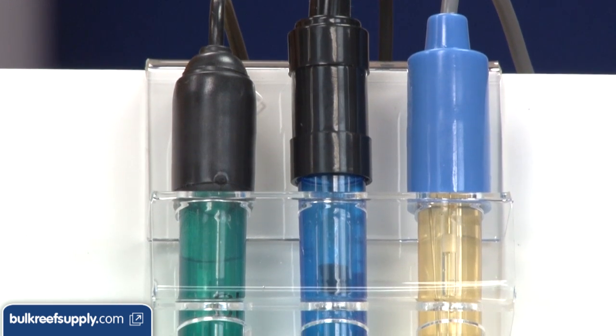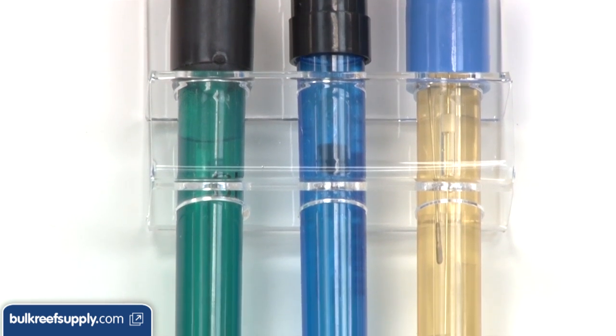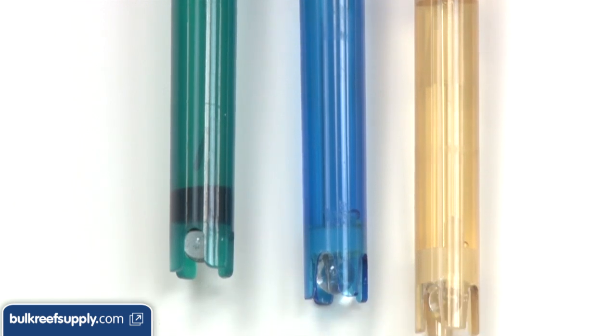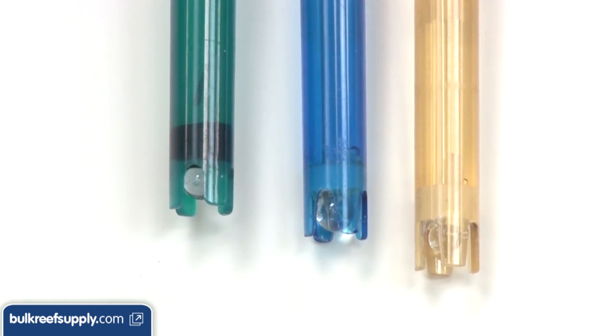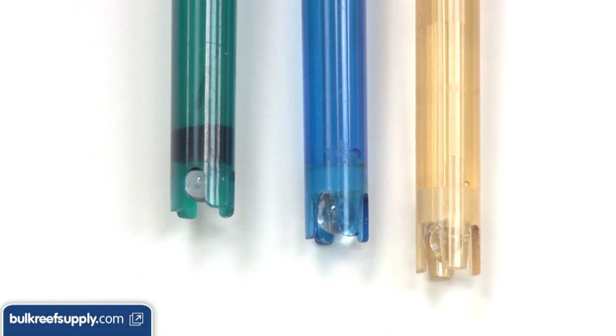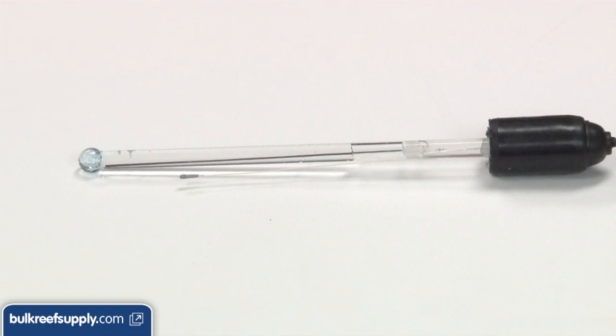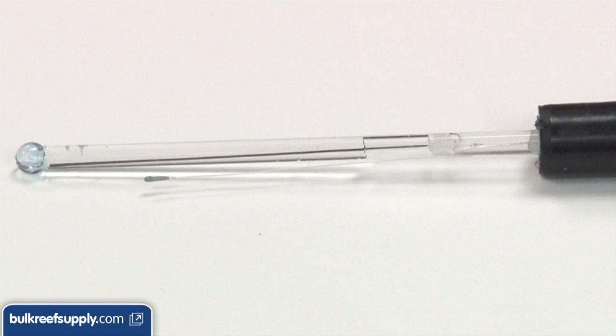The technology is pretty simple. Most of today's probes are known as combination probes, which means there are really two probes in one. The primary probe or electrode is located at the probe tip inside of the bulb. We disassembled this one so you can see the inner workings. The primary electrode is located in the center of the glass tube.